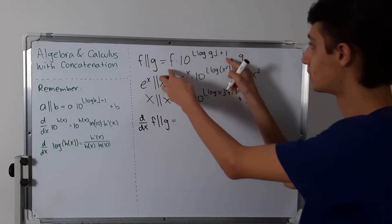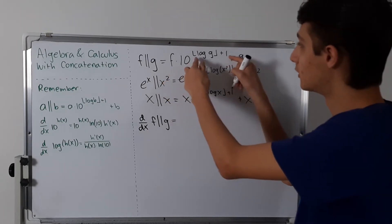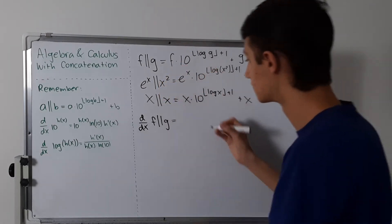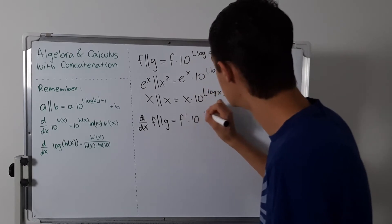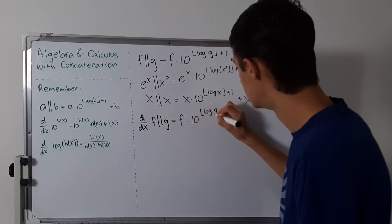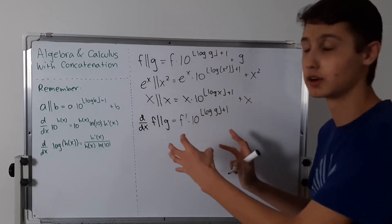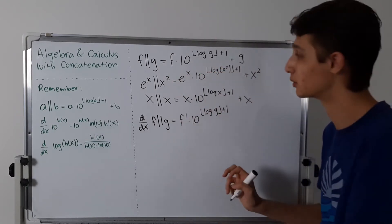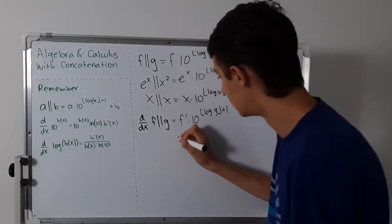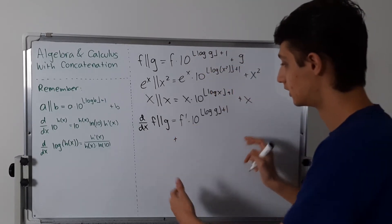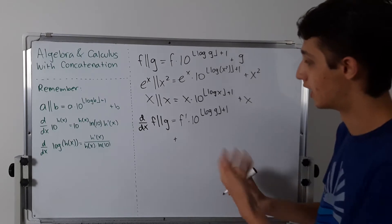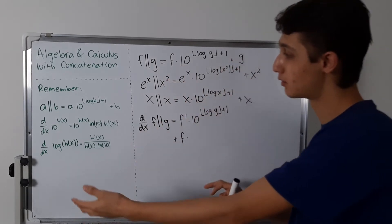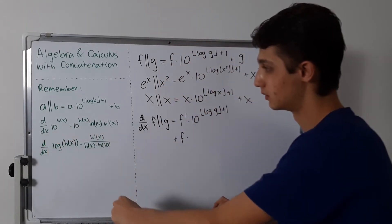First up, we have the product rule. We have this weird chain rule portion here, so I'm going to ignore it for now and start with f prime times this guy. So f prime times 10 to the floor of log of g plus 1. That's our first term — I'm not including plus g because that's going to be at the end. I'm still working on the product rule. Then I'm going to add f multiplied by the derivative of this, which will be very beneficial for us.